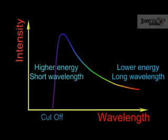The spectrum has a minimum wavelength below which X-rays are not produced. This corresponds to the highest energy X-rays which are produced when the electron loses all its kinetic energy.